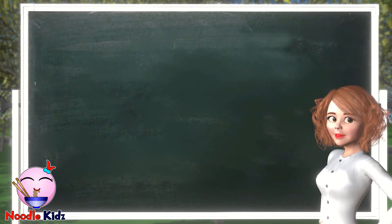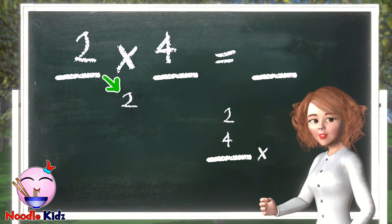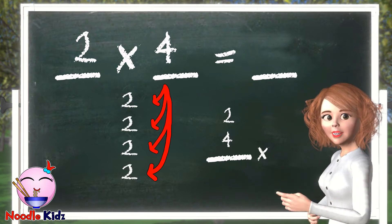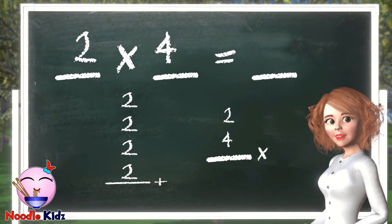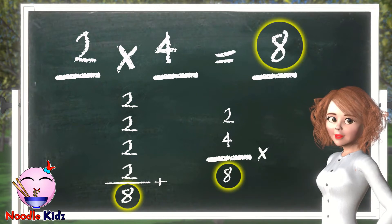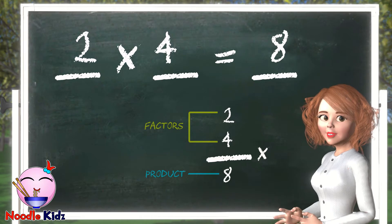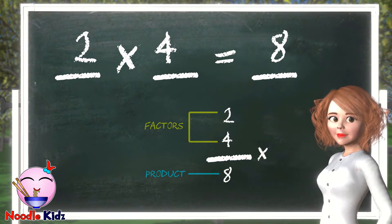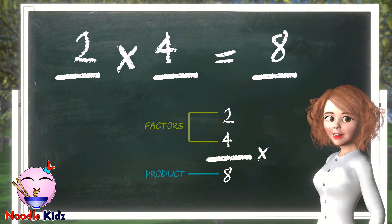What about two times four? It means you take the number two and add it four times. Two plus two plus two plus two equals eight. So two times four equals eight. These numbers, four and two, are called factors. The number eight is the result, or product.